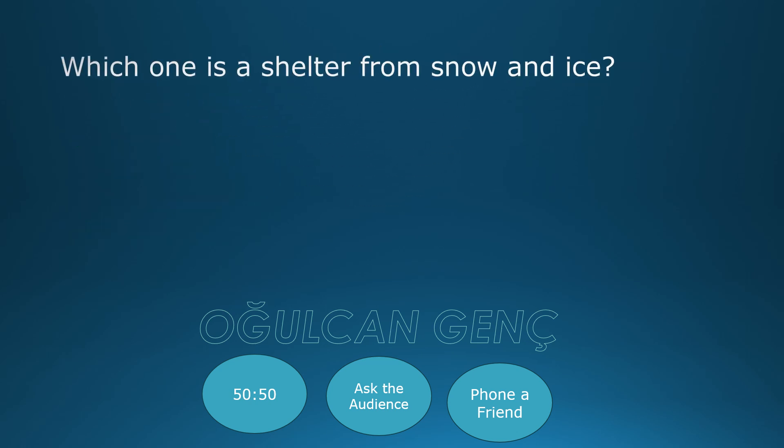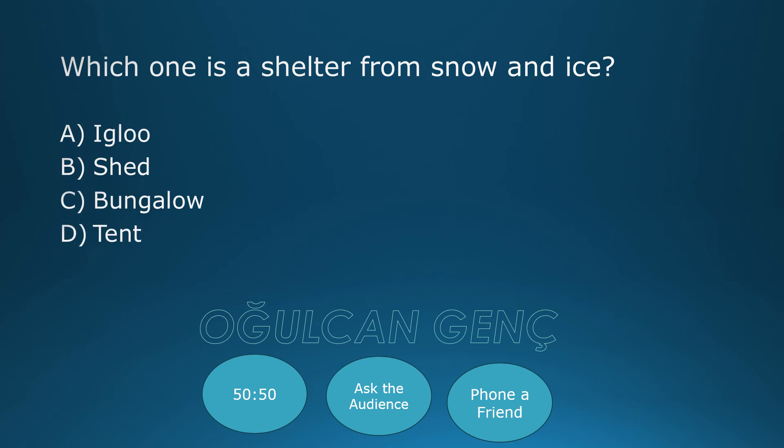Which one is a shelter from snow and ice? Options: Igloo, Shed, Bungalow, Tent. Final answer: Bungalow, option C. Correct answer is Igloo.